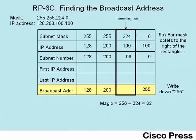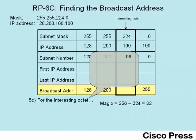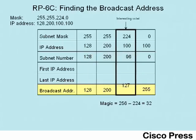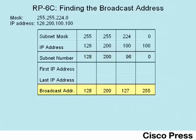At step 5c, to figure out the broadcast address's value in the interesting octet, take the subnet number's value in that octet, add the magic number, and subtract 1. The math is pretty simple — we end up with 127 in that octet, which gives us the final broadcast address of 128.200.127.255.